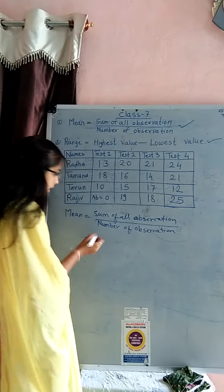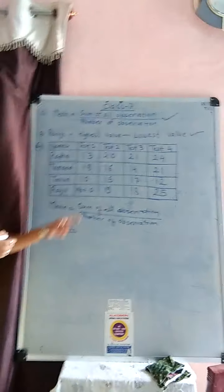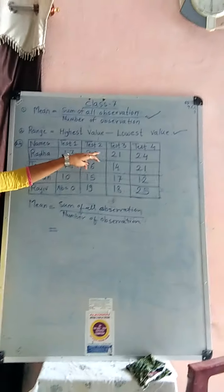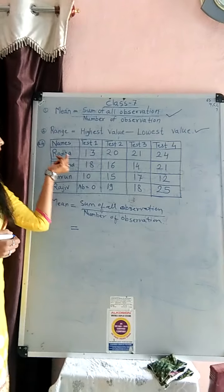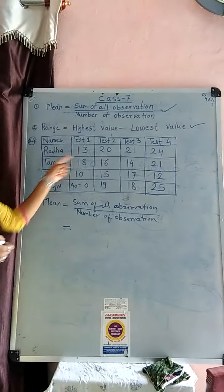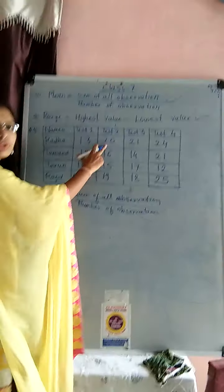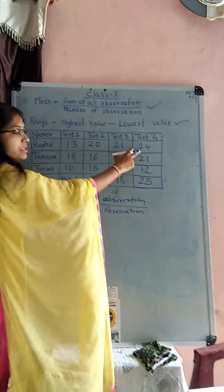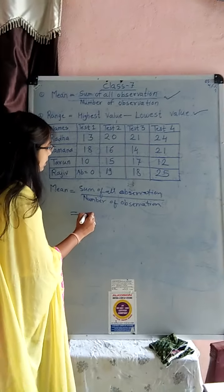Now just write the value on that structure, sum of all observation. Sum means addition. Test 1, test 2, test 3 and test 4. Radha's. So, 13 plus 20 plus 21 plus 24 is equal to, look at here,